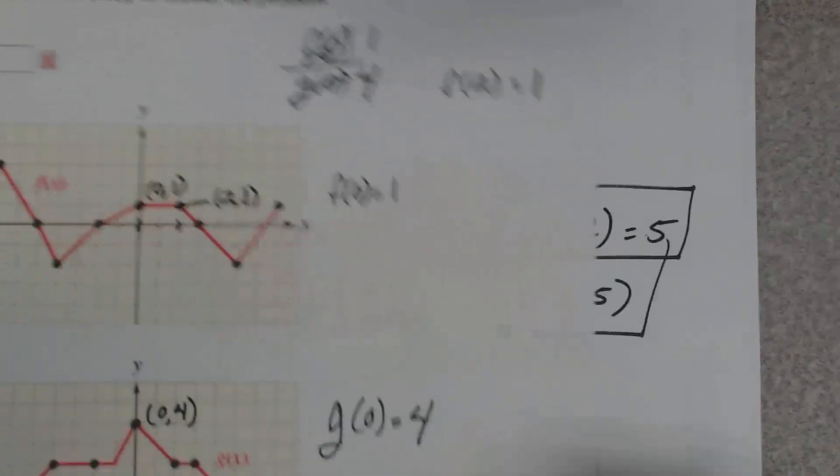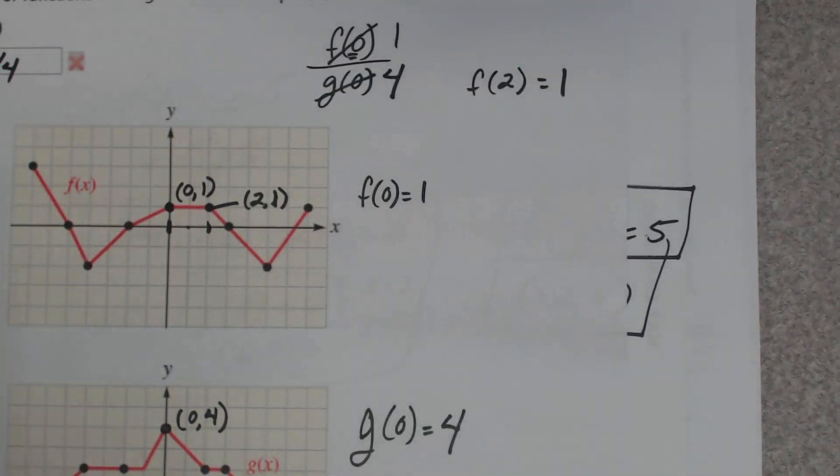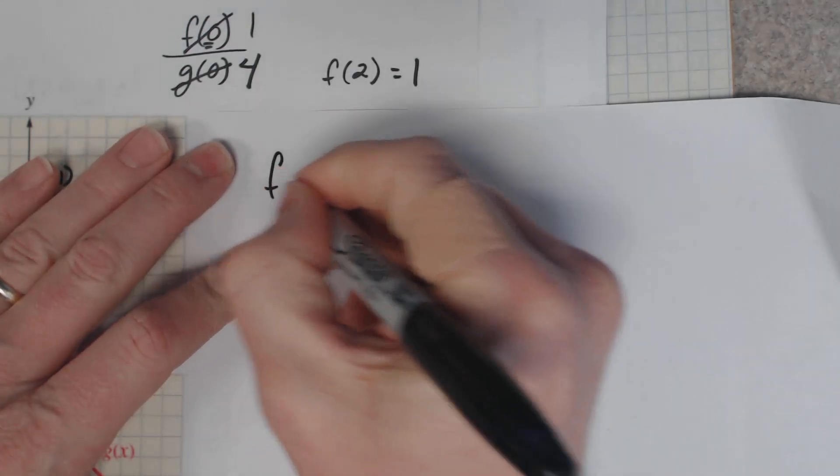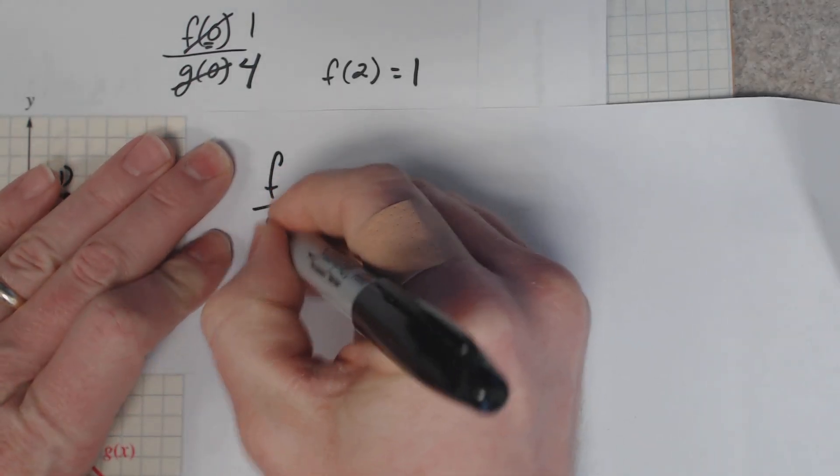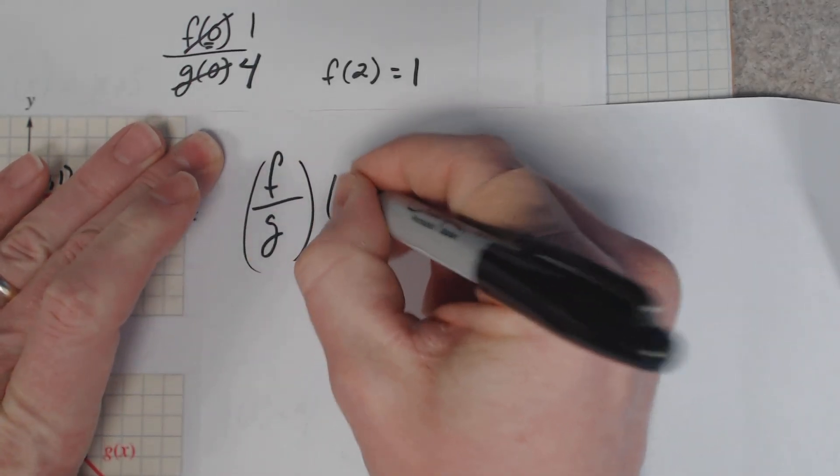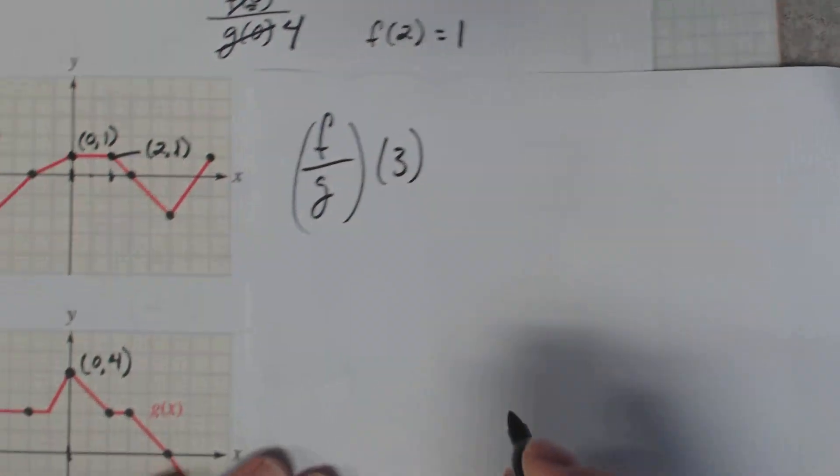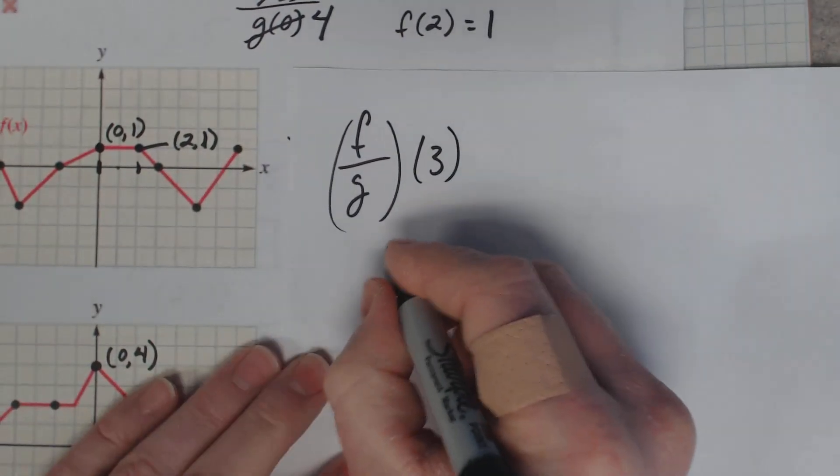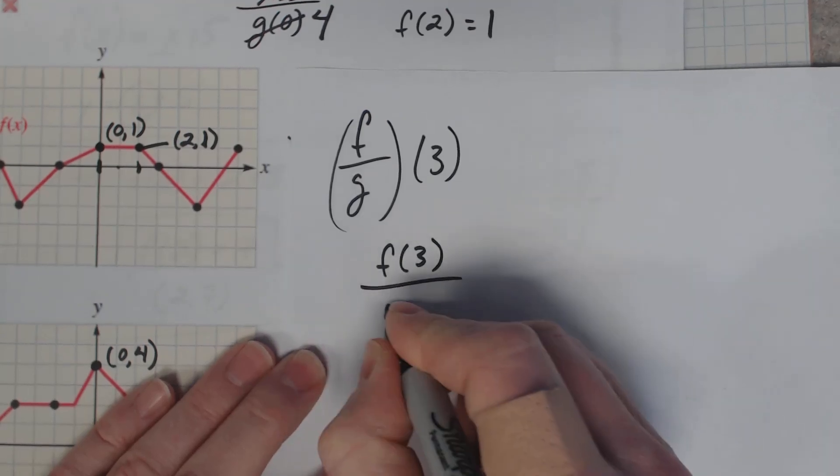Let's try another one. What if it was (f/g)(3)? Okay, so that's like finding f(3) over g(3).